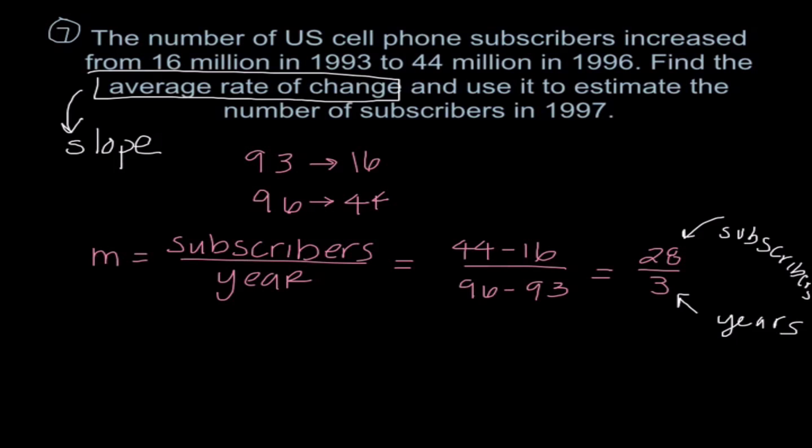So just kind of to describe what this is telling us. It's saying subscribers, so 28 million subscribers every three years. So if I convert that, and you know how much I hate mixed numbers, but I think this actually is an appropriate time to kind of have that. It's telling us that we have 9 and 1 third million subscribers per year. So I'm going to write out that label. So that answered our very first question.